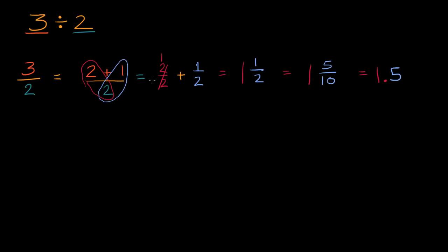As you get more practice, you say this is the same thing as three halves. Two goes into three one time, and there's a half left over. So writing this as a mixed number, it's one and a half. And a half, written as a decimal, is five tenths. So this is one and five tenths.